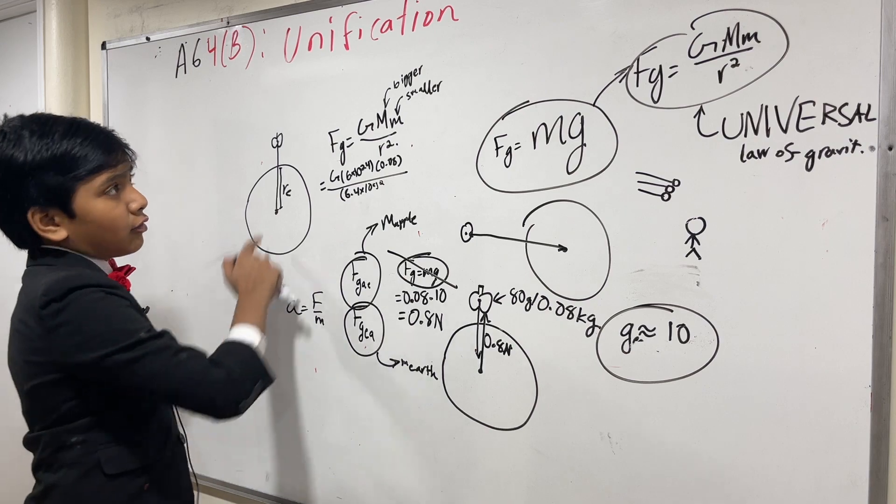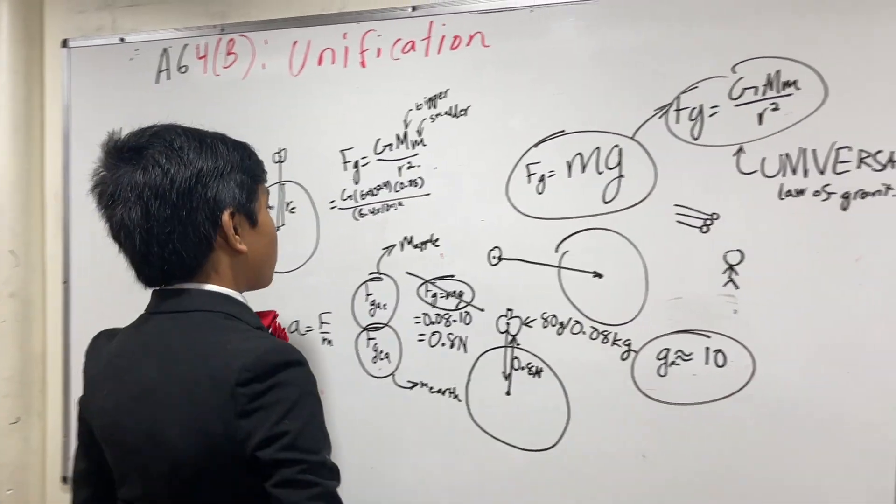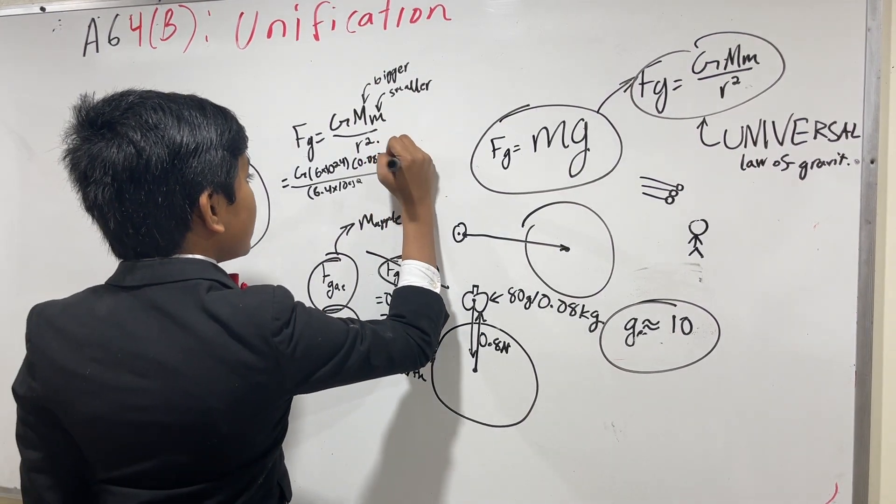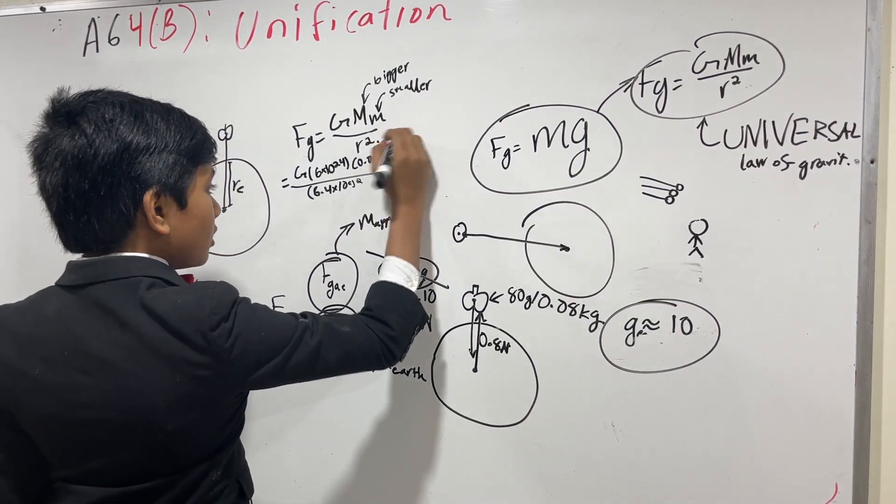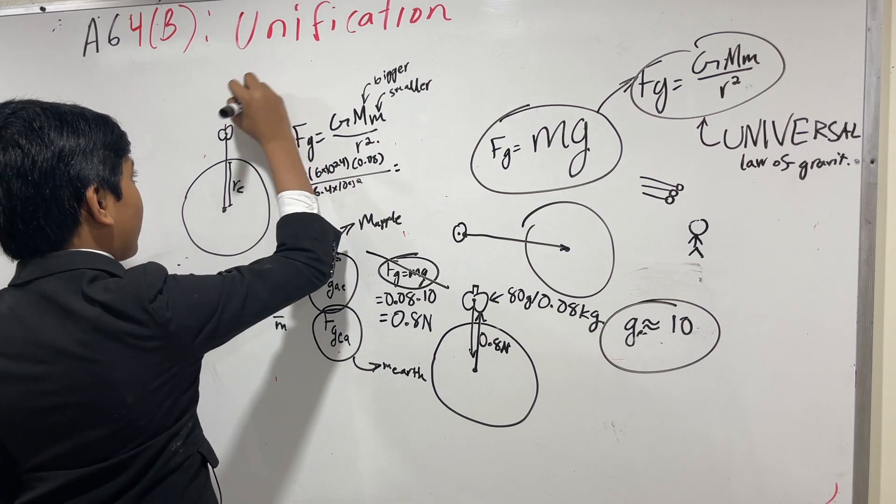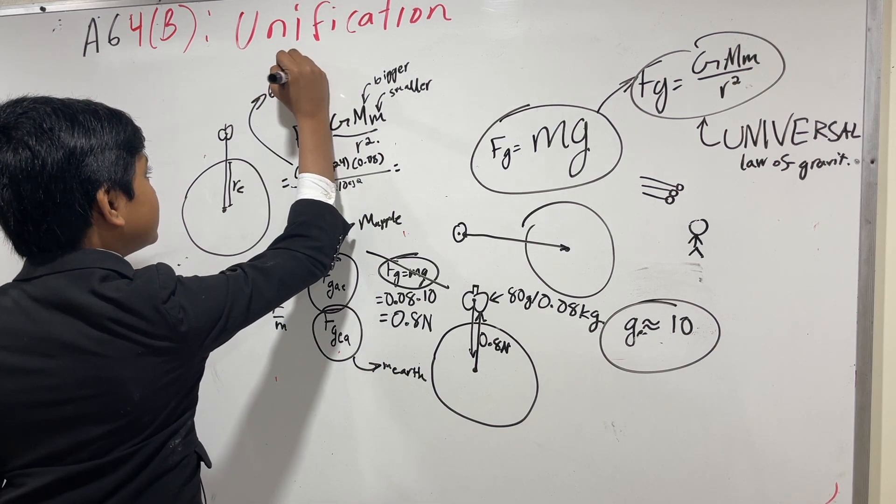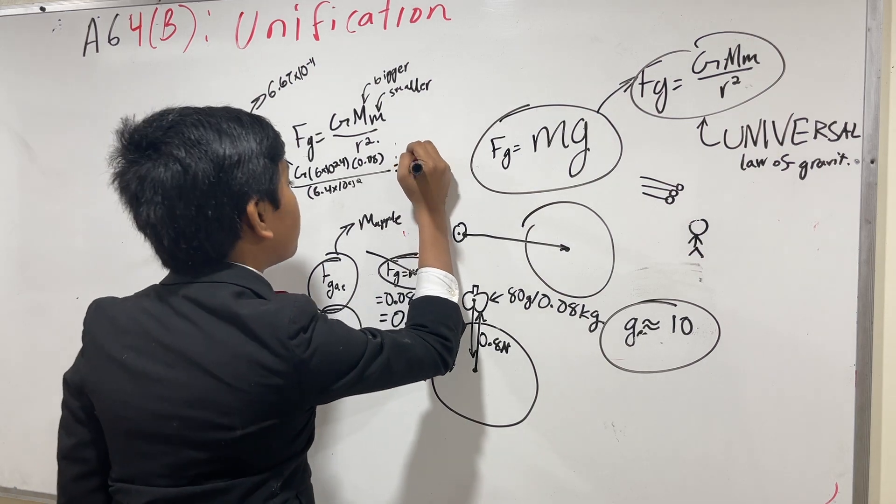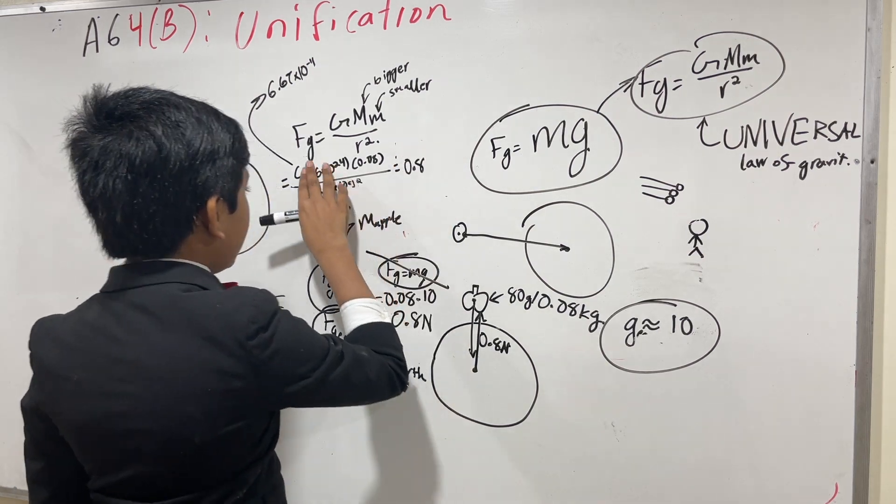So, now, obviously this isn't to scale, by the way. Otherwise, that would be a massive apple. So, this, no matter what, and g, by the way, for reference, is 6.67 times 10 to the minus 11. This, no matter what, will equal to 0.8. And, if we flip it the other way.